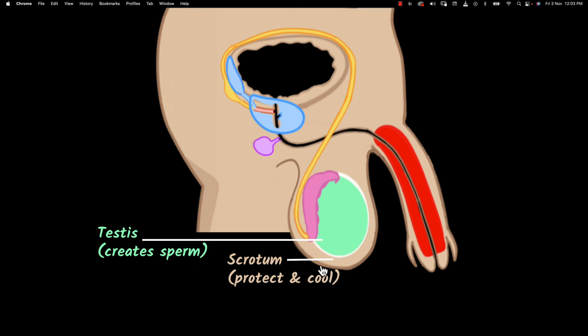And the scrotum is the one that sort of protects the testes. It also helps it hang below the body because creating sperms requires temperatures that are slightly lower than the body temperature. So it also ensures it's slightly cooler.